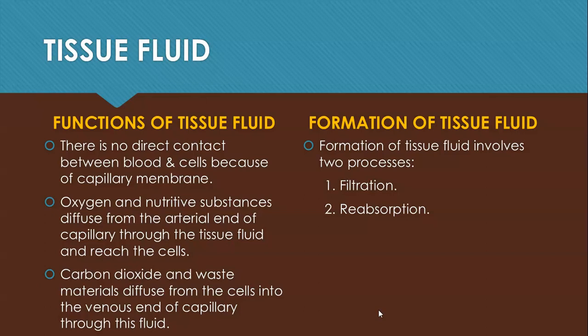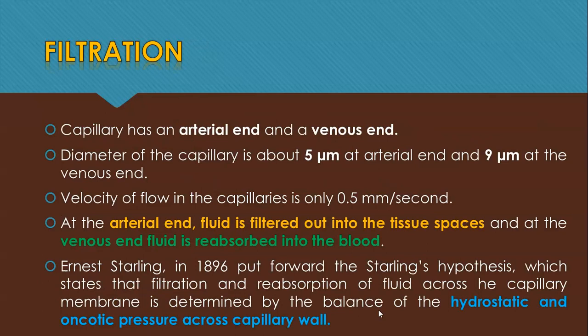What are the functions of tissue fluid? There is no direct contact between blood and cells because of the capillary membrane. Hence, oxygen, carbon dioxide, and nutritive substances from the arterial end of the capillary pass through the tissue fluid and reach the cell. Conversely, carbon dioxide and waste materials diffuse from the cells through the tissue fluid into the venous end of the capillaries.